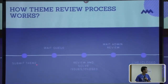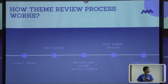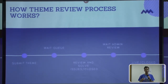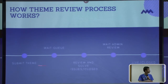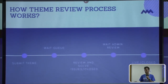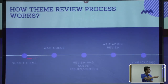Now, how does the theme review process work? You need to submit your theme first, it will go into a wait queue, then review and solve issues — or your theme will be closed. You communicate with the reviewer in this step, then you wait for admin review. Admins will check the final version and then set your theme live, or closed if not approved. If your theme gets lots of issues while checking by the admin, it will close and you need to submit again from the beginning. This process takes around two to three months.